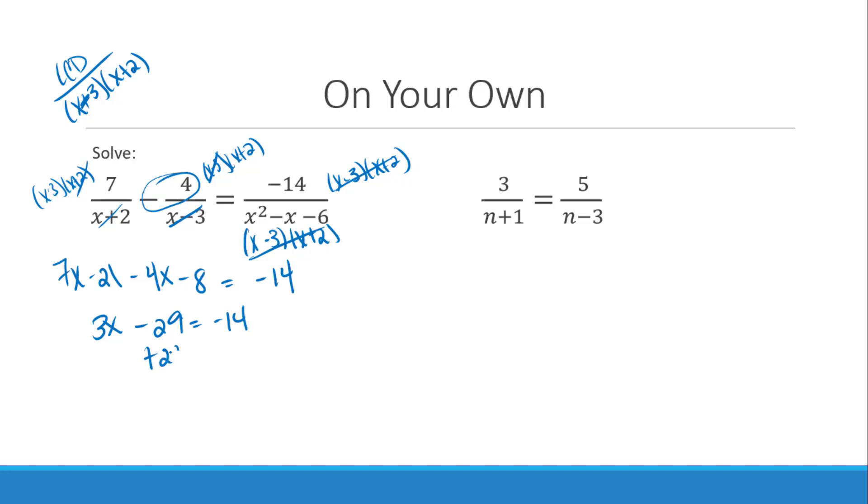So this is going to give me 3x, and this is 21 minus 8 is minus 29 is equal to negative 14. We'll add 29 to both sides, so we get 3x is equal to 15. We'll divide by 3. x is equal to 5. That will not cause the denominator to be equal to 0, so that is my solution.